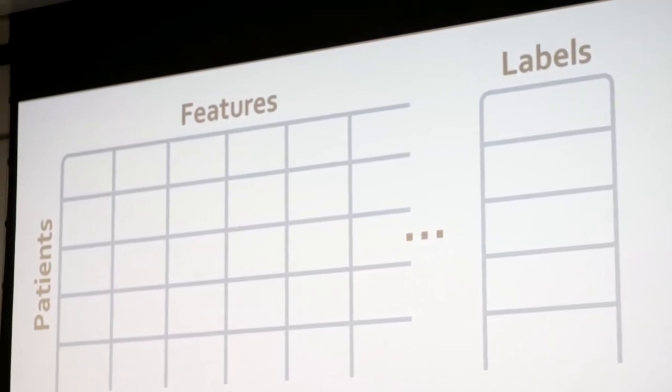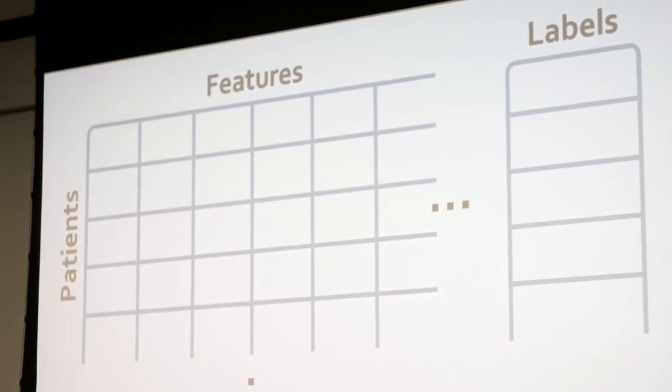You've probably seen this before, but this is the general layout of how machine learning works when it comes to medicine. Usually we're working with a table of data, where the rows represent patients or samples and the columns are our different features. Features are machine learning jargon, but for those who don't know, features are just characteristics or information that we know about our patients.